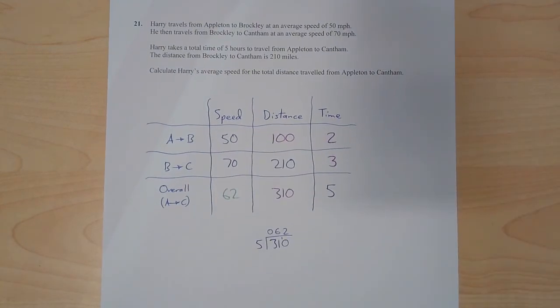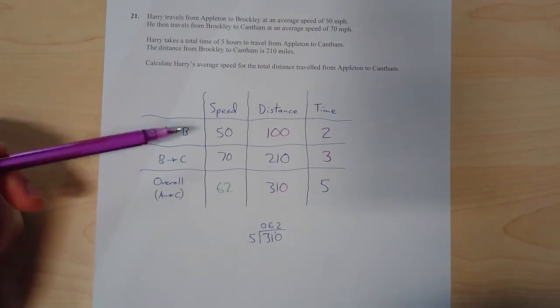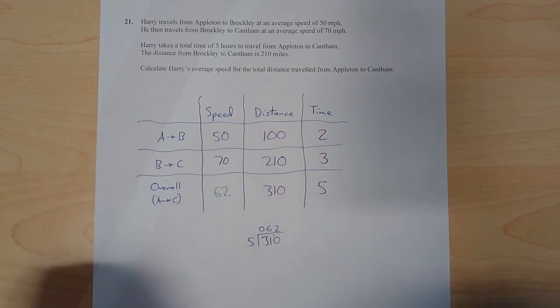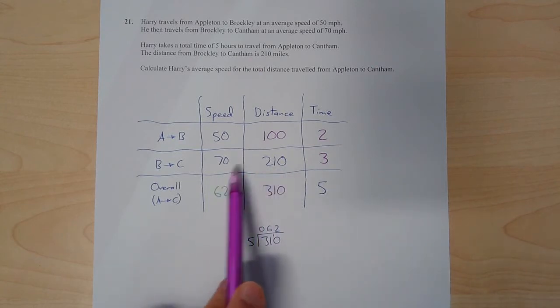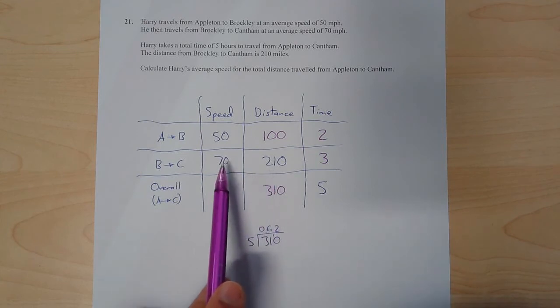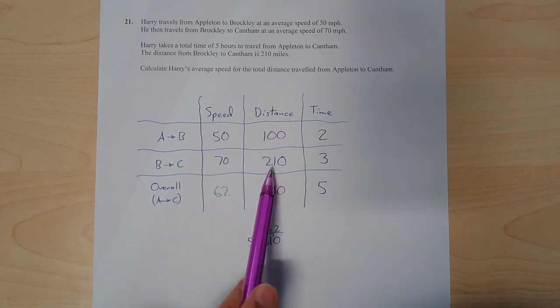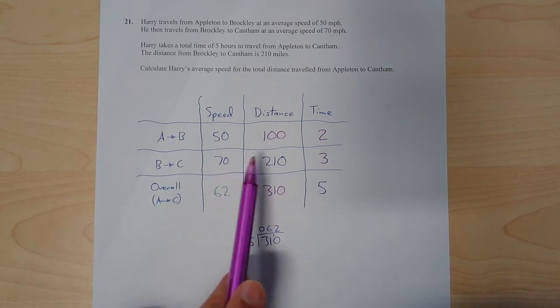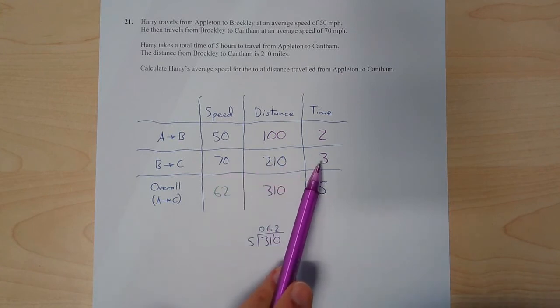And by doing that, I can work out these other numbers. OK, so the ones in blue are the ones which are given in the question. This, this, this and this. So what did I work out next? Well, it was this middle line here. I knew the speed was 70 and the distance was 210. So if he's going 70 miles per hour and he travels a total distance of 210, well, if I times that by three, I get this. So he must have been traveling for three hours.